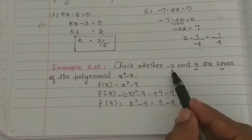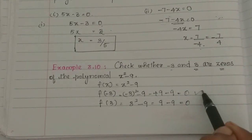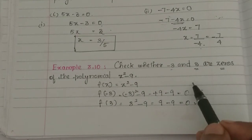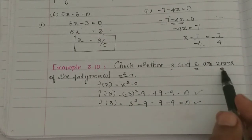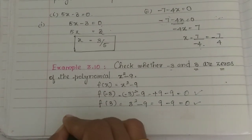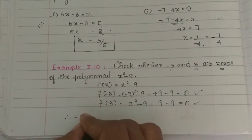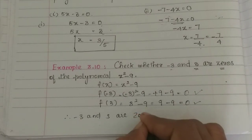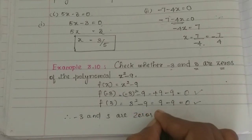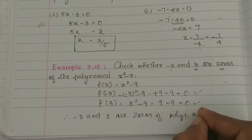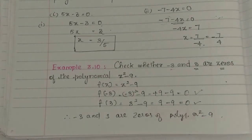So f of minus 3 equals 0 and f of 3 equals 0. Therefore minus 3 and plus 3 are zeros of the polynomial x squared minus 9.